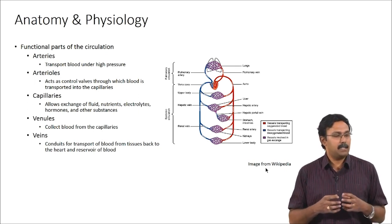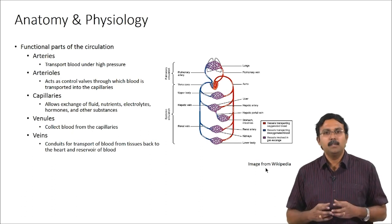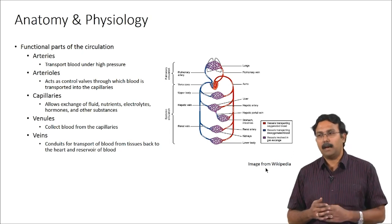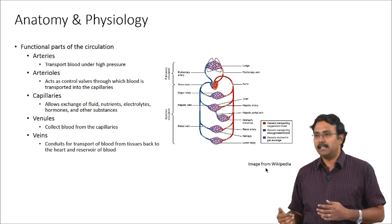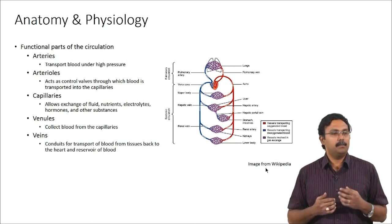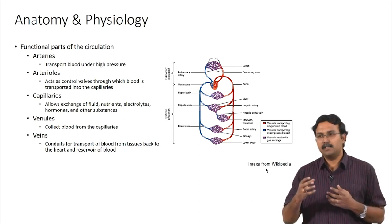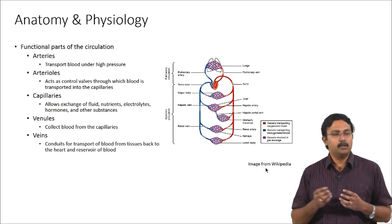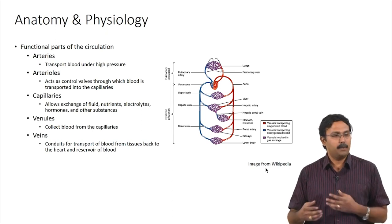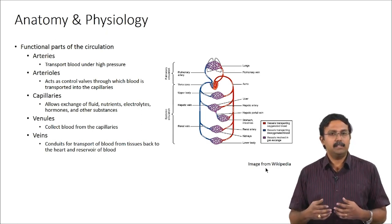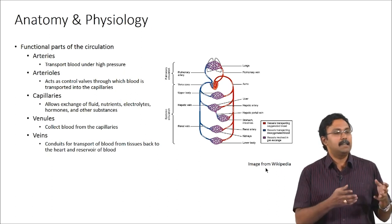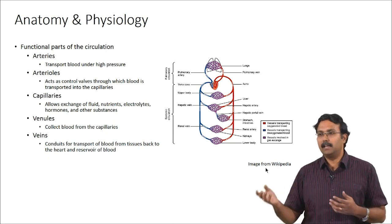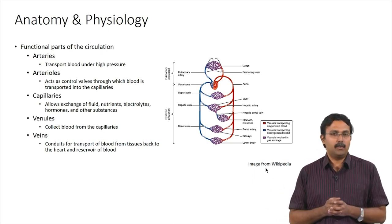There are different parts involved in the circulatory system. The functional parts are the arteries, arterioles, capillaries, venules, and veins. Oxygenated blood first enters the arteries, branches out into arterioles, then goes into the capillaries where oxygen transfer happens. The deoxygenated blood is collected by venules, enters the veins, and is taken back to the lungs and heart. This is the overall structure.